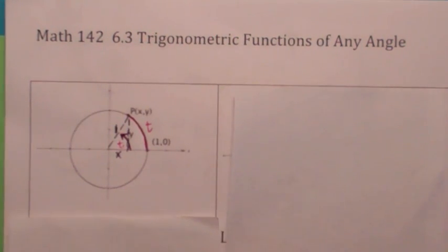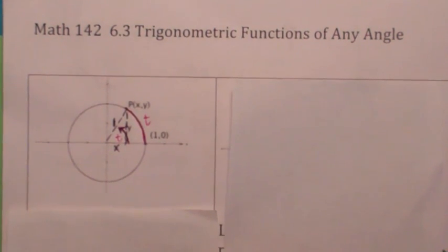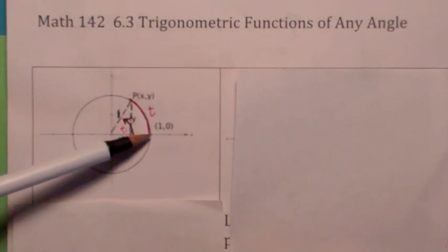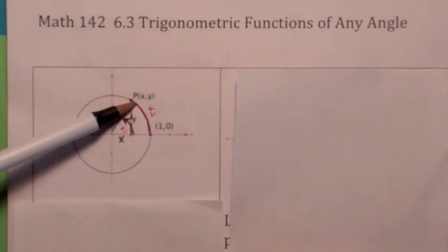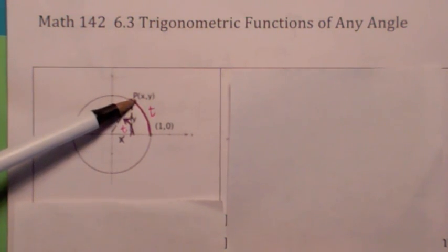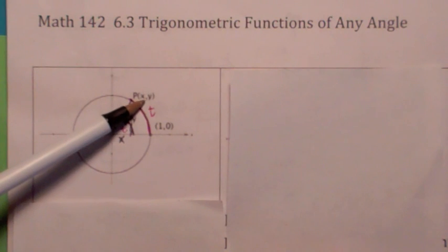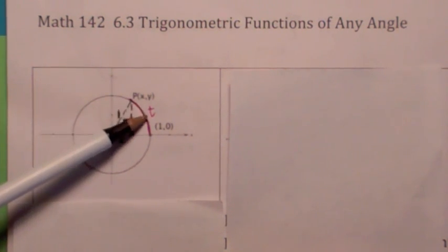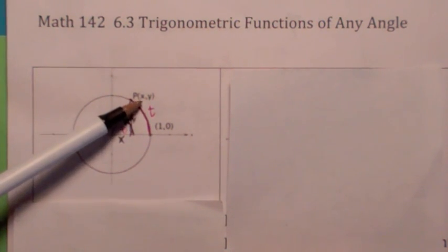We started off talking about the unit circle — we didn't talk about angles at all. You started at (1, 0), you marched around a certain number of units, and we defined the six trig functions in terms of the point p(x, y) where you end up. For example, the cosine of t was x and the sine of t was y.